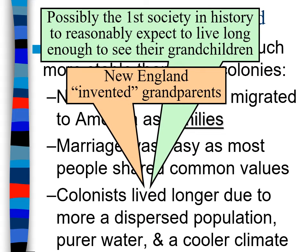The colonists ended up living a lot longer in the New England region than anywhere else, for a couple of reasons. Number one, dispersed population — they weren't tightly compacted like the overcrowding problems they saw in Europe, where diseases carried very quickly. If there were diseases carried by insects, they would die in the winter because of the cooler climate — a little more comfortable than the long, hot, humid climate down south. And they also had pure water, which is really important if you want to live longer.